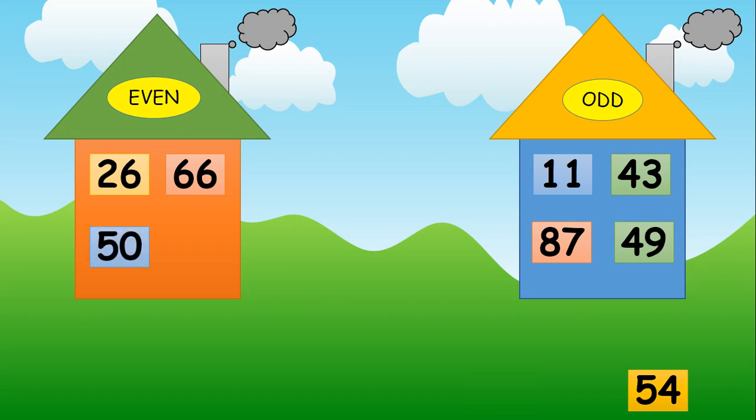Now look at the last number: 54. Look at the ones place. Which digit is in the ones place? Yes, 4. So 4 is an even number. So the number 54 is an even number. So in which house will we place the number 54? Yes, even house. Wonderful my kids. I hope now you have understood even numbers and odd numbers. Remember, we have to look at the ones place — the digit in the ones place will tell us whether the number is even or odd.